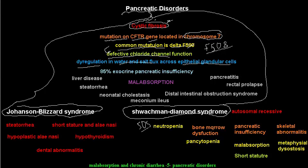The defect in the chloride channel function leads to dysregulation of water and salt flux across the epithelial glandular cells. This dysregulation results in accumulation of mucus in the respiratory system, the liver, and many other organs. Cystic fibrosis is indeed a multi-systemic disease.